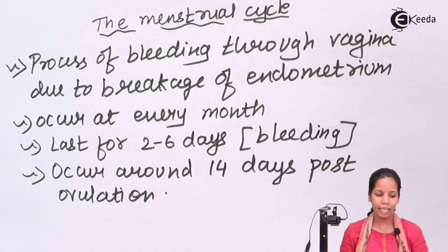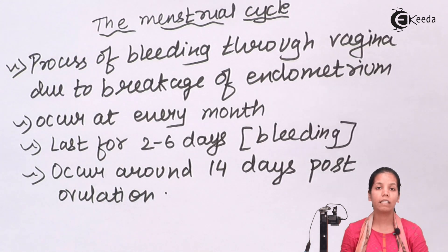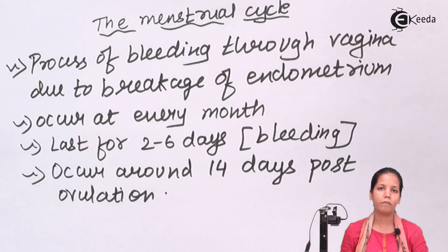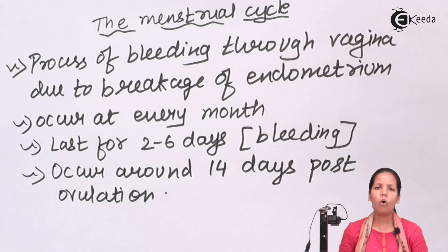What happens in the menstrual cycle is that the endometrium wall breaks down, and once that endometrium breaks there has to be further rebuilding. Also, the hormones formed during the follicular phase over the 28-day cycle — such as FSH and LH — all have to go back since there is no fertilization happening.